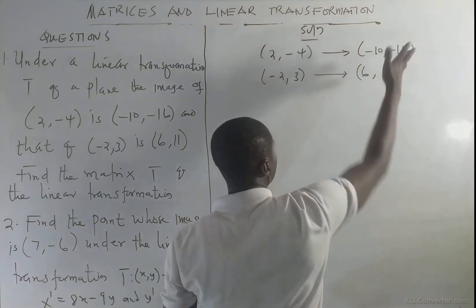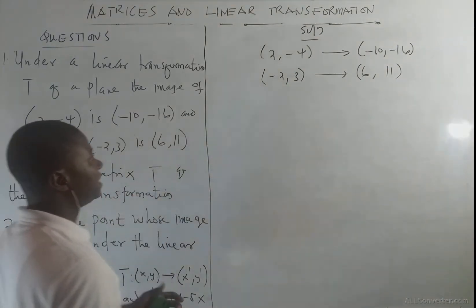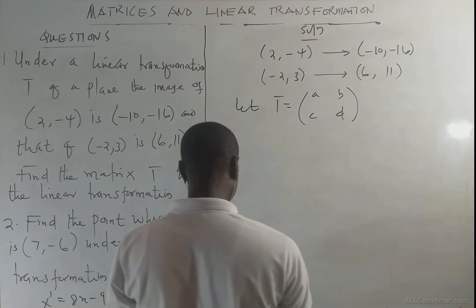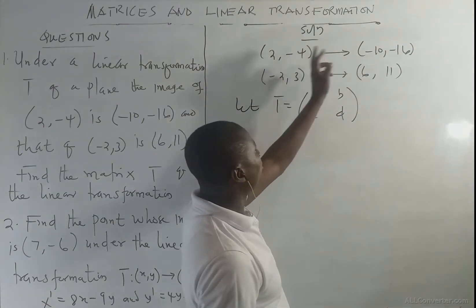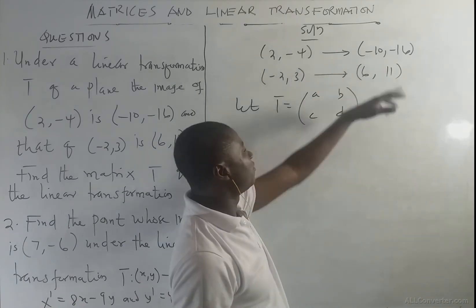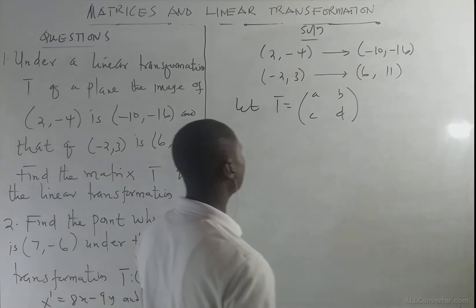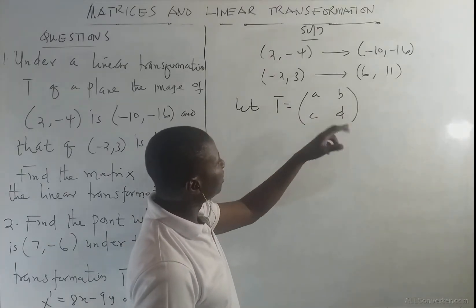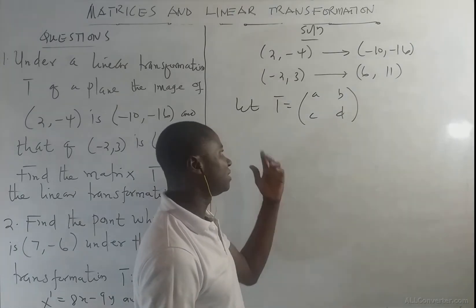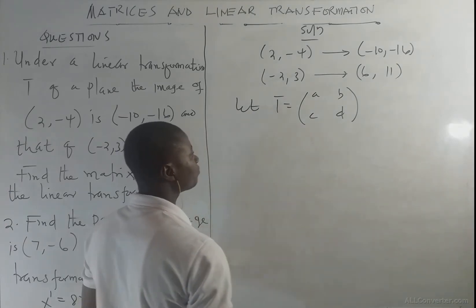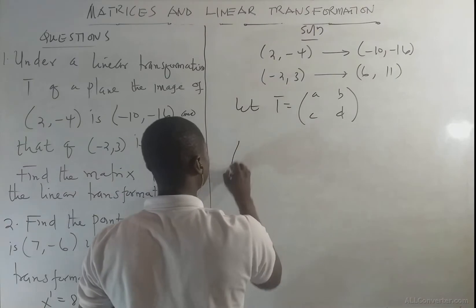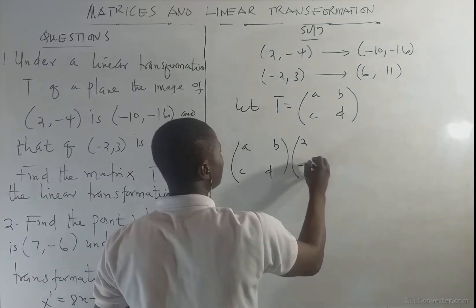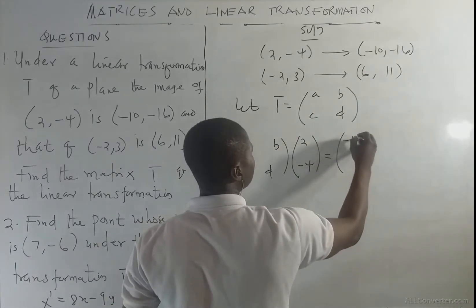Let the matrix T be equal to [a, b; c, d], a two-by-two matrix. We know that when you multiply the matrix by the points, the matrix [a, b; c, d] multiplied by the first point (2, -4) equals the image (-10, -16).